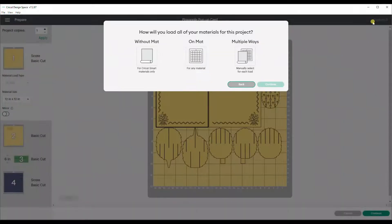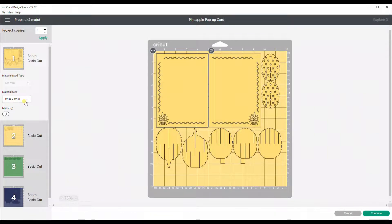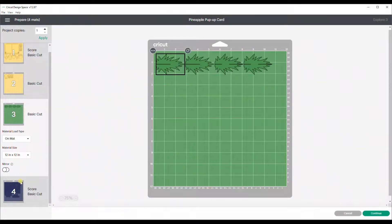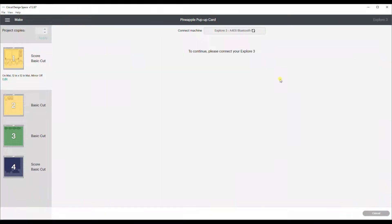When you are happy with your size, click make it. I am going to do this on a mat because I don't have smart paper and also there are 4 different colors. This just makes it easy for me. Double check the size of your mats for each one of the colors and then once you are happy with that, click continue.